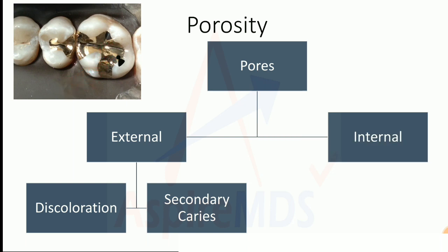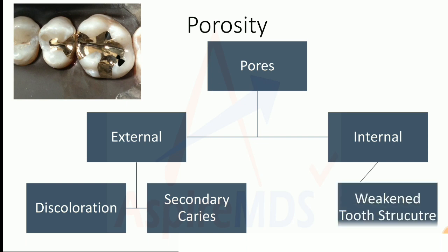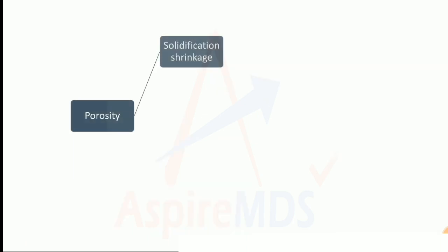Internal porosities are present within the casting. These are not visible to the naked eye — you have to do sectioning of the casting to see them. Their effect is that they will weaken the casting structure.